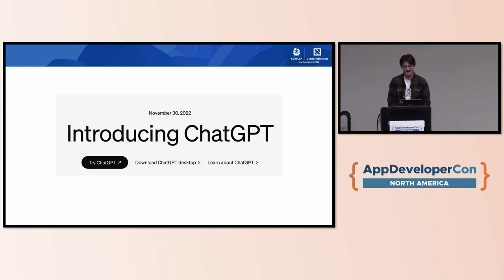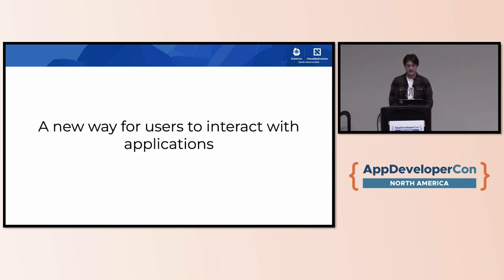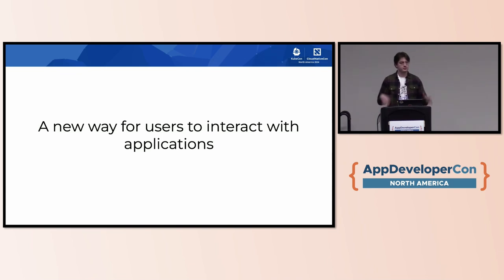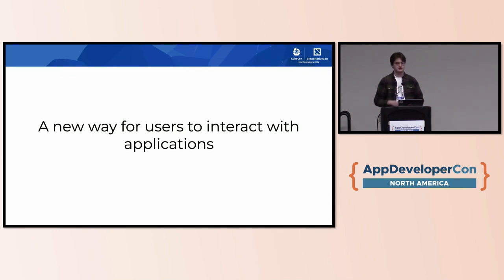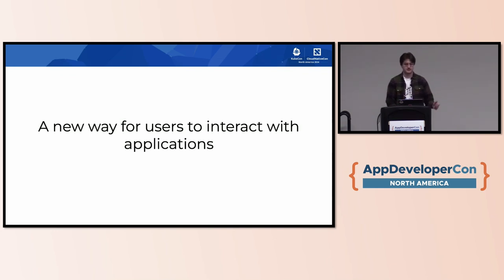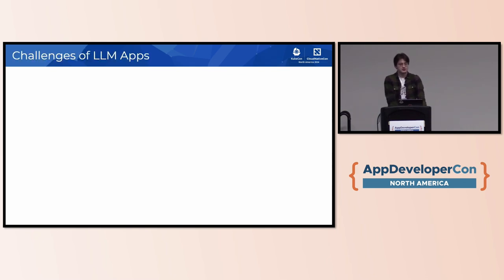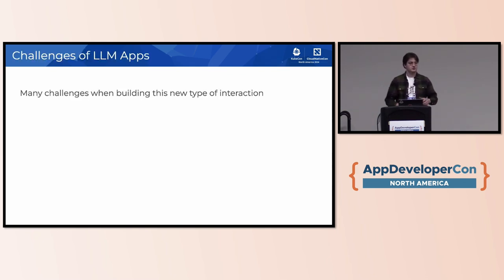A couple years ago, ChatGPT came out and it's really revolutionized how you build apps. Specifically, it's a new way for users to interact with applications — before, they had to enter things via buttons or clicks, and now it's a text-based interaction where a statistical model takes understanding from the text and does something. This makes really rich interactions, but it also leads to a lot of challenges in terms of how we build applications around these interactions.